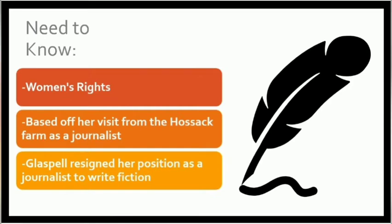A little bit about the piece itself: it took place in the early 1900s when women really couldn't vote and things like that, so it was definitely a different time in history. This particular piece was inspired by her time as a journalist, and she based her characters off of an investigation itself. Susan did resign as a journalist to pursue fiction, probably to document the times she was living in a more creative way. Trifles was based off of a true story about the murder of John Hozak.